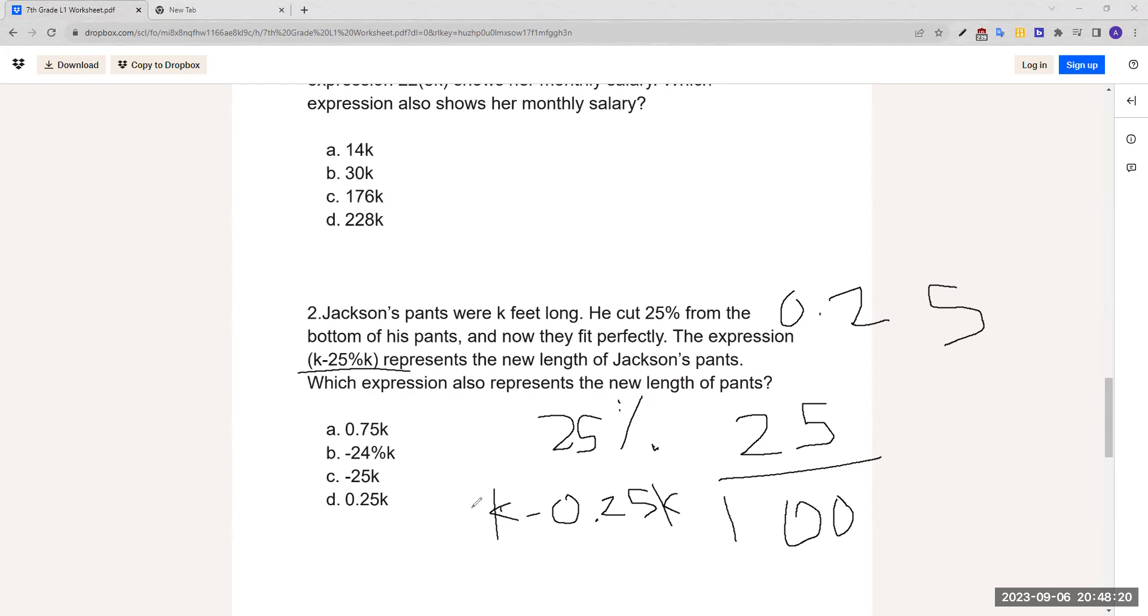We have k minus 0.25k. Now this k, there's nothing here, so it'd just be a 1 right here. When you subtract this, it'd be 0.75k, which is a.